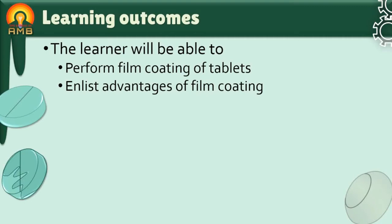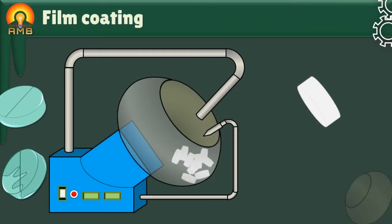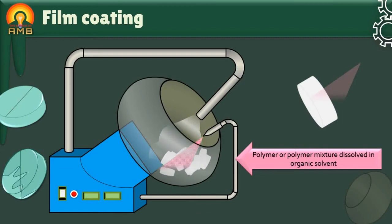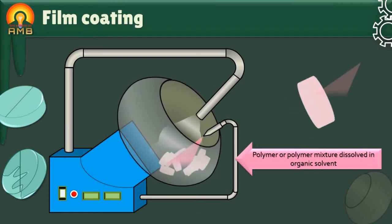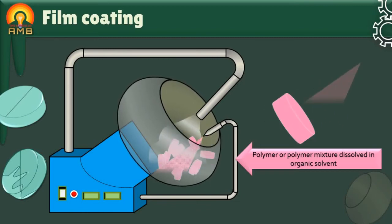In this presentation, we are going to discuss film coating in detail. In film coating, tablets are coated with several layers of a solution of either a single polymer or a mixture of polymers. The polymer is dissolved in a volatile organic solvent and is sprayed over the tablets in a rotating pan until a uniform, good film is formed on the tablet.